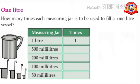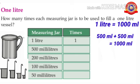See the next one. How many times do you use a 500 ml jar to fill a 1 liter vessel? You know, 1 liter equals 1000 ml. How many 500 ml make 1000 ml? Yes, 2 times 500 ml make 1000 ml. That is, 500 ml plus 500 ml equals 1000 ml. So when a 500 ml jar is used 2 times, the 1 liter vessel fills up.